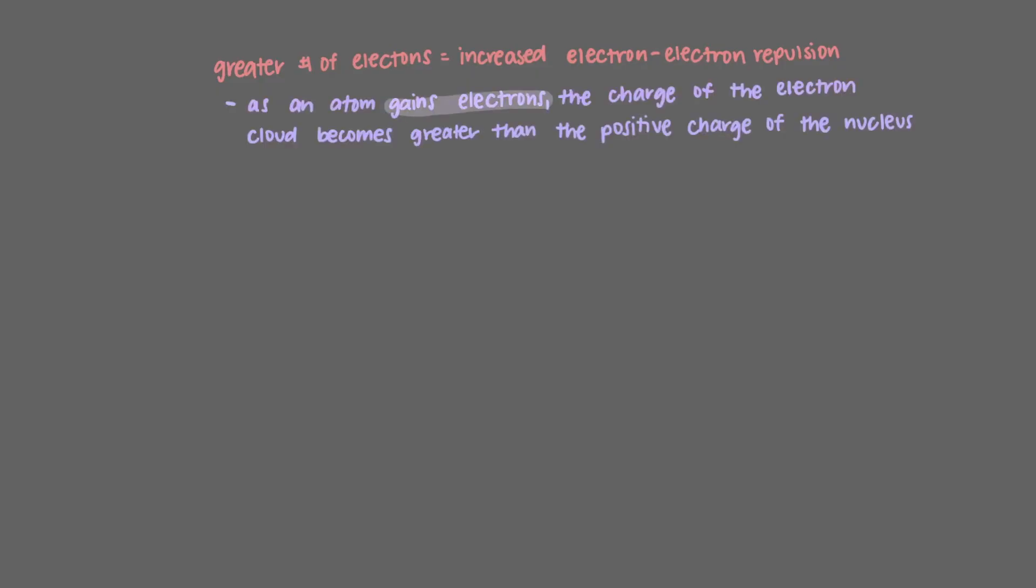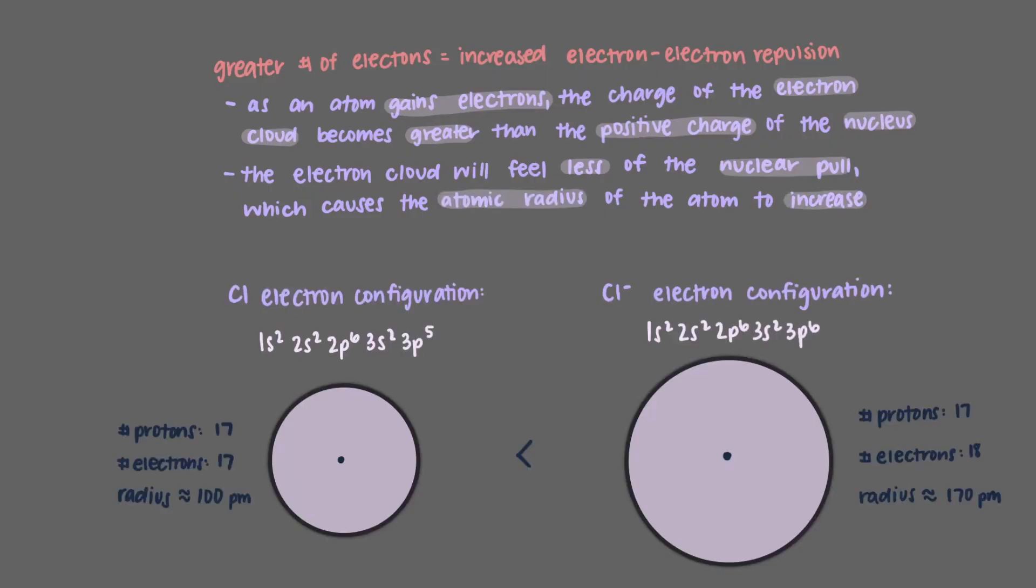As the atom gains electrons, the charge of the electron cloud becomes greater than the positive charge of the nucleus. This means that the electron cloud will feel less of the nuclear pull, which causes the atomic radius of the atom to increase. In this case, the species with the larger atomic radius is Cl-.